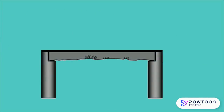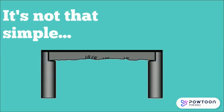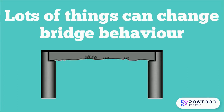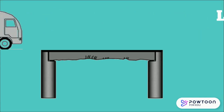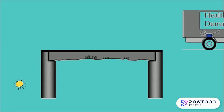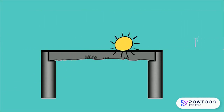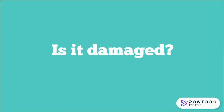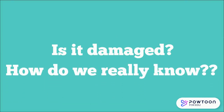As great as this all sounds there are still plenty of challenges. There are lots of things that can cause the behaviour of a bridge to change, from the speed at which the vehicle crosses to how sunny or windy it might be on that particular day. So how can we really know if a bridge is damaged just because it's vibrating a bit differently?